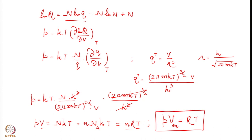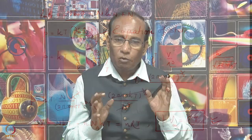This is the equation of state. By restricting to ideal gases and using the general partition function expression, we have shown PV = NRT. This is an equation you have been using for a long time, and we called it the equation of state, but it is applicable only to ideal systems, ideal gases.